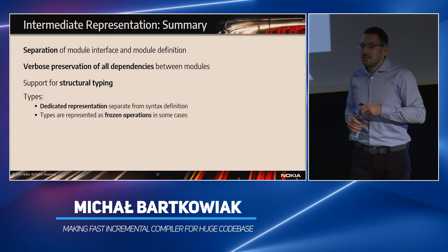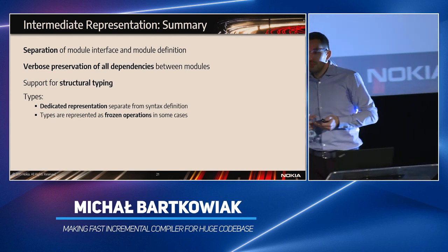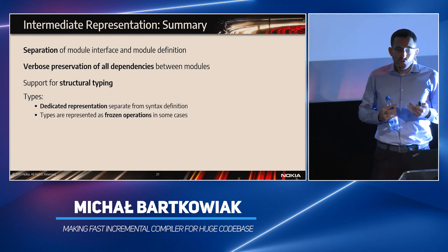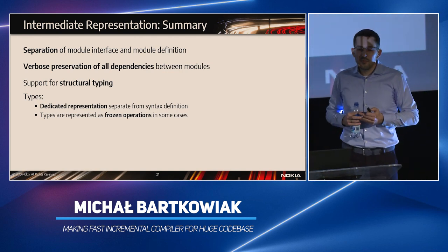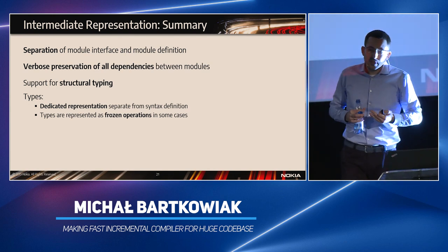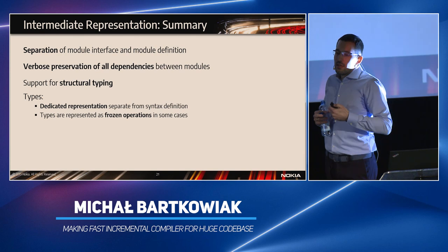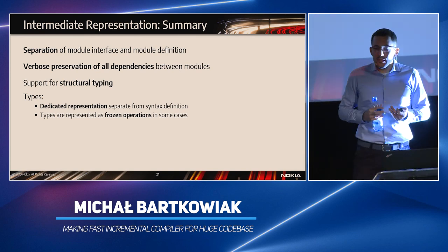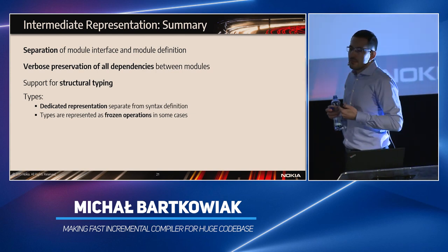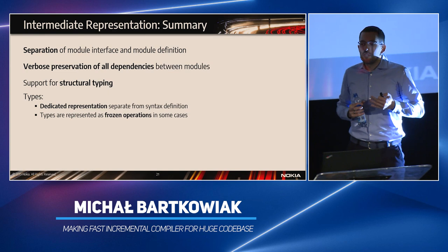Let's summarize this intermediate representation. Firstly, we separated module interface and module definition. We have this verbose preservation of dependencies between modules to track and utilize them in the algorithm. The TTCN3 type system is a bit more complicated or unusual because it supports structural typing. It also has language intrinsics which forced us to have a dedicated representation separated from the syntax definition. And these types can sometimes be represented as frozen operations.